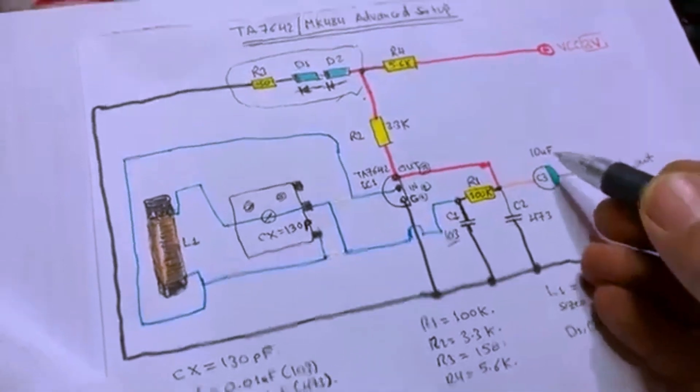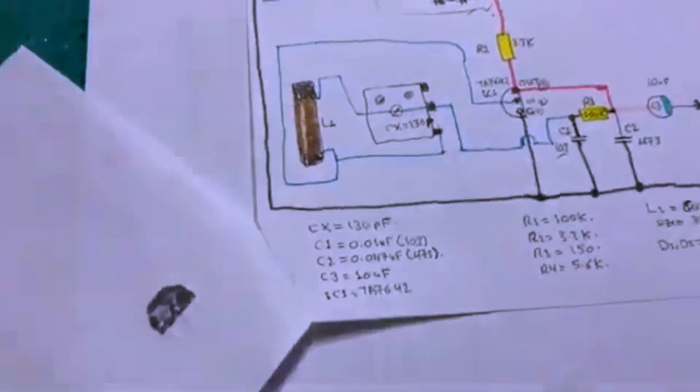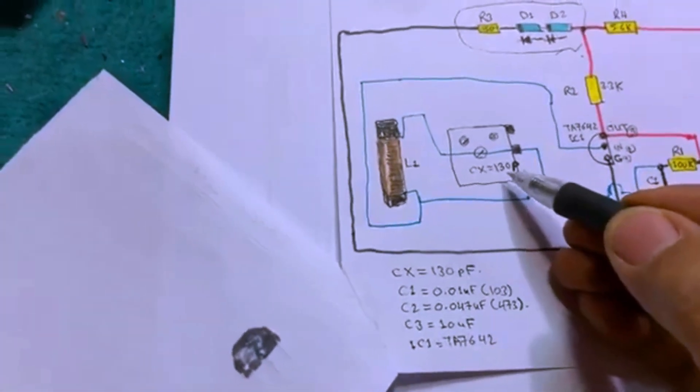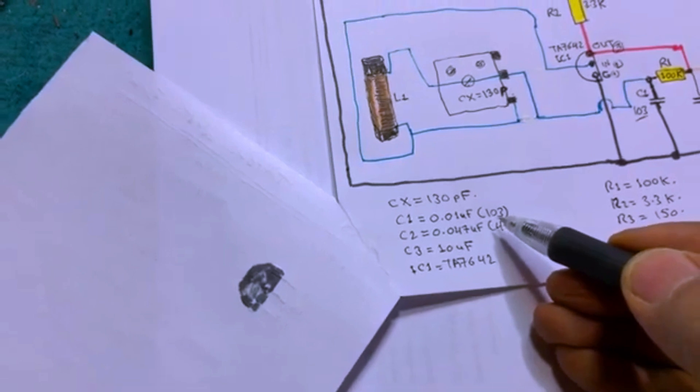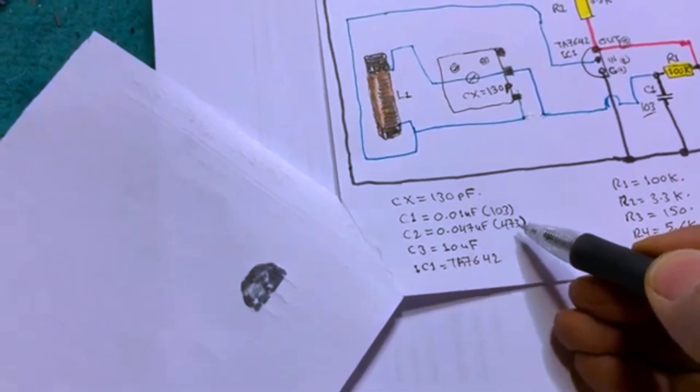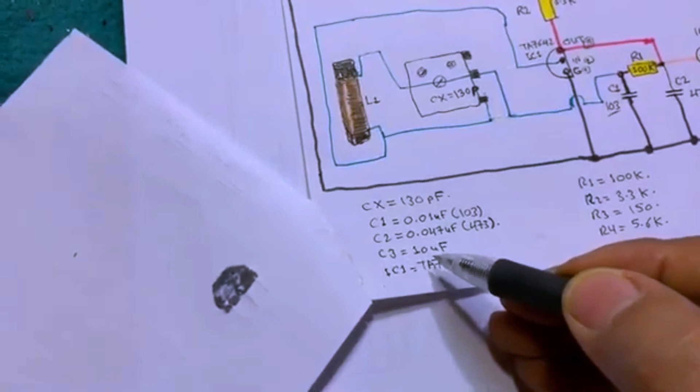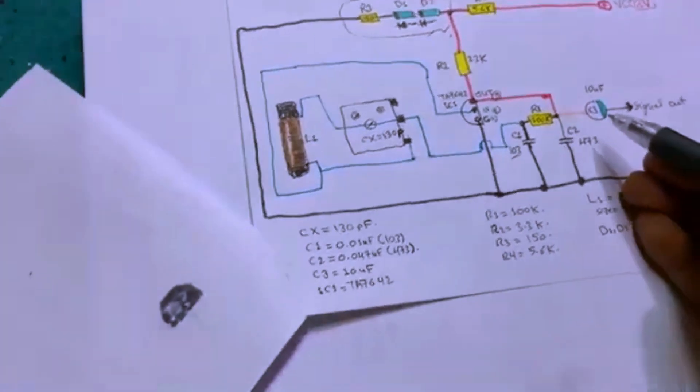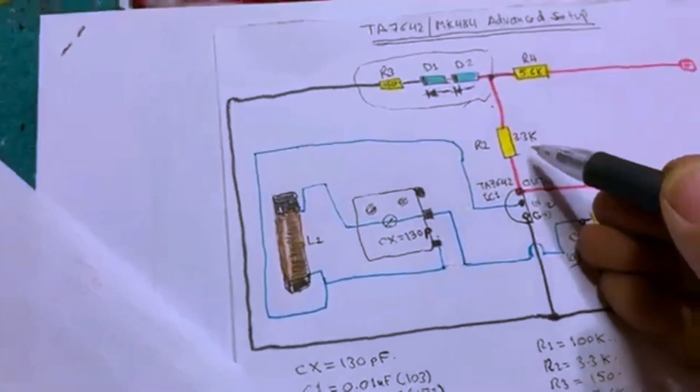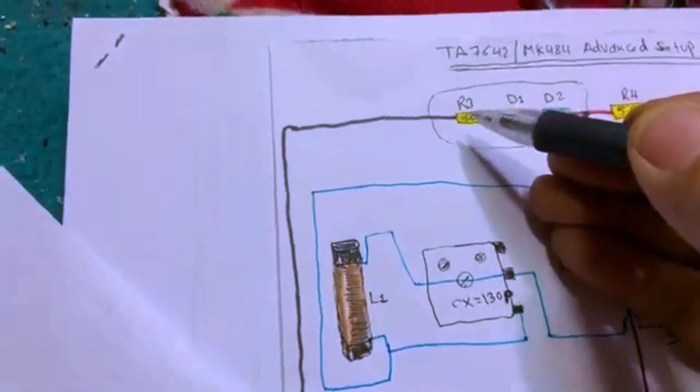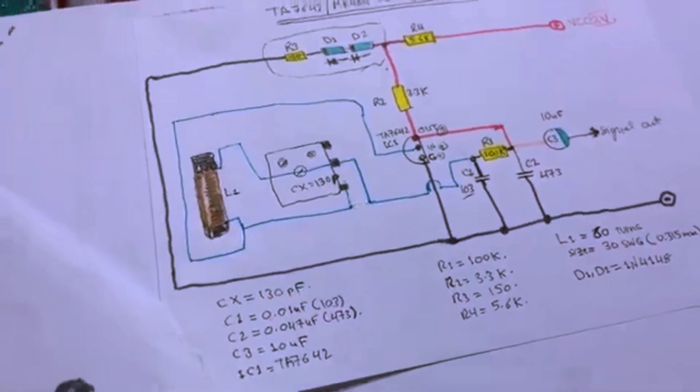Connected to a coupling capacitor 10 microfarads and connect this to your audio amplifier and you are done. This is the circuit again. The CX capacitor is 130 picofarads, C1 is 0.01 microfarads, C2 is 0.047 microfarad, C3 is 10 microfarads. You have R1 100 kilo ohm, R2 3.3 kilo ohms, R3 150 ohms, R4 5.6 kilos. This is the L1.